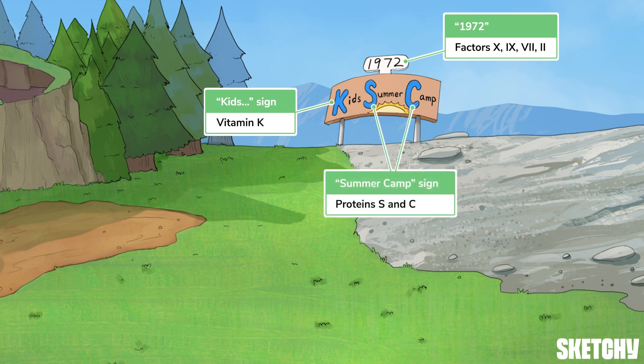In addition to these coagulation factors, there are two vitamin K-dependent anticoagulant proteins, proteins S and C, that prevent overcoagulation.